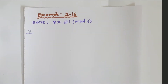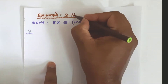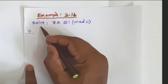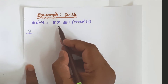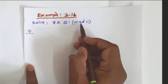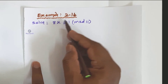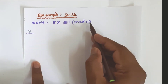Hey students, I am Karnan, your maths teacher. In this video you will learn 10th Samacheer Maths Chapter 2: Numbers and Sequences. The topic is Modular Arithmetic, Example 2.14. In this example, we have a question: solve 8x ≡ 1 (mod 11), meaning 8x divided by 11 gives remainder 1.